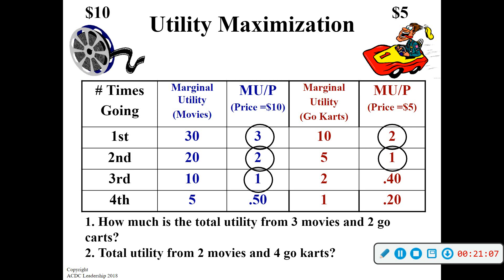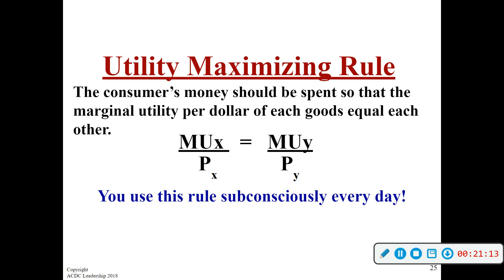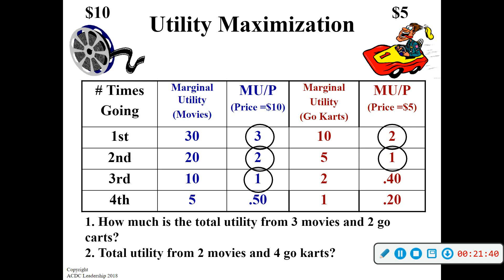There is a formula for this. They want you to know it because sometimes they'll give you a multiple choice question on it. You don't always have to plug it in, but the formula is: marginal utility of X divided by the price of X equals the marginal utility of Y divided by the price of Y. If that means nothing to you, all that means is these two utility-per-dollar numbers are going to be the same in your final combination.